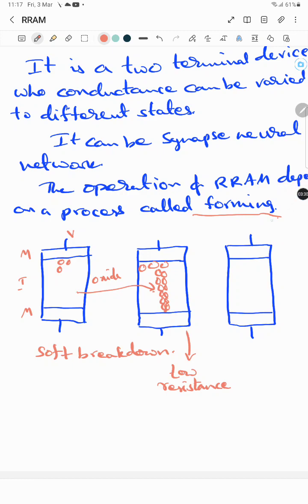Now by applying a negative voltage here, we can attract these vacancies back towards the top electrode, keeping some insulating space here. This means we have raised the resistance of the device.